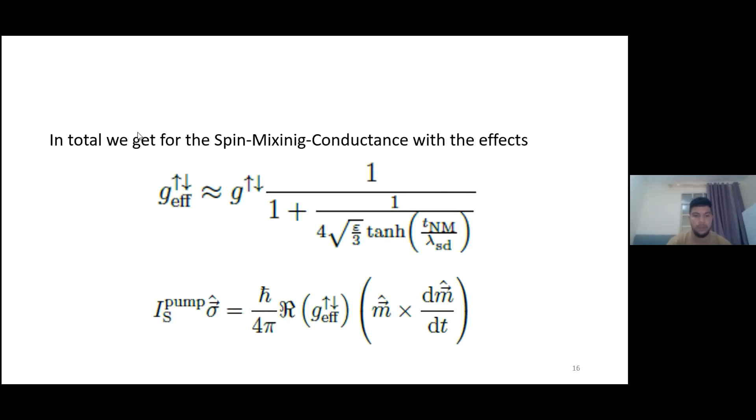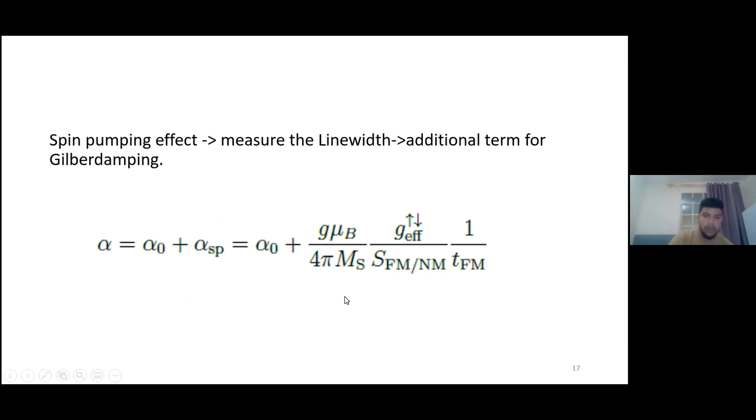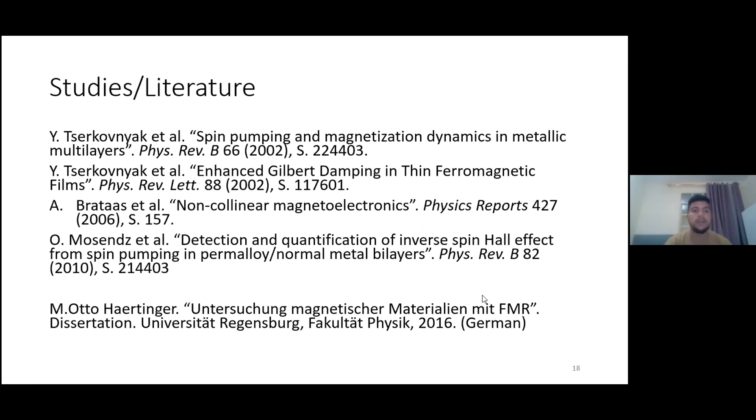And then we have to correct the spin mixing conductance with the two effects. So what we have is this matrix and for the current, we know by the theory that the real part of the equation is much bigger than the imaginary part. So it gets into this equation. We measure the line widths and we also get the additional damping term, which is part of the lambda equation. And it's just we have to add it because we have a damping factor. And here in this equation, S is the surface area of the transition surface and T is the thickness of the ferromagnetic layer. That was it. This is my studies and the literature that I had.